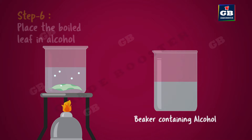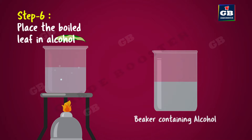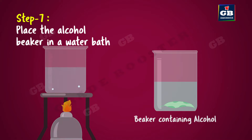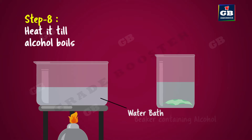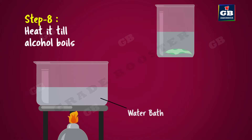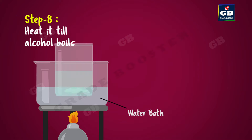Take it out and place it in a beaker containing alcohol. Now, place the beaker with alcohol into a water bath. Heat the setup till the alcohol begins to boil. The leaf loses its color, and the alcohol turns green.